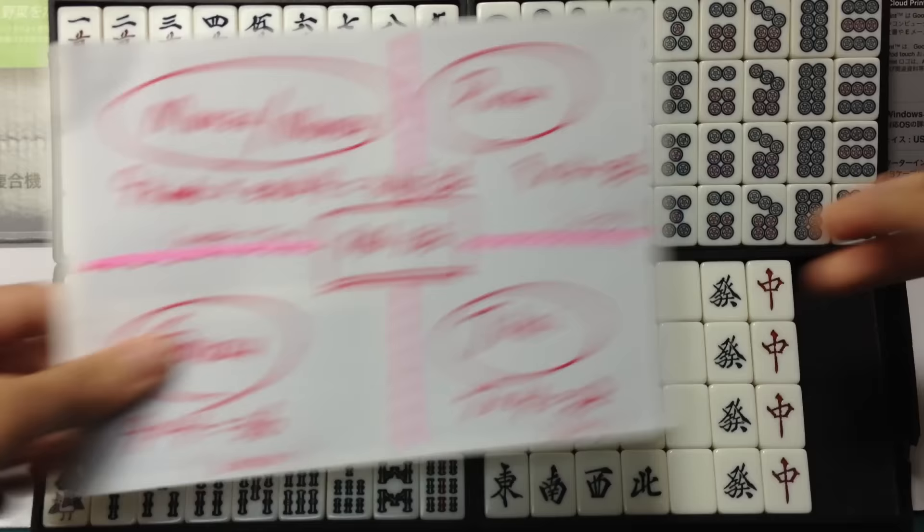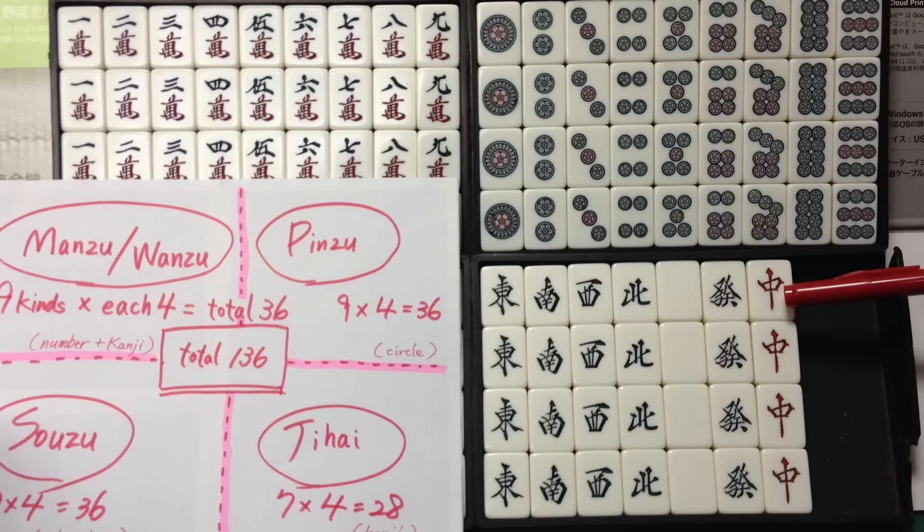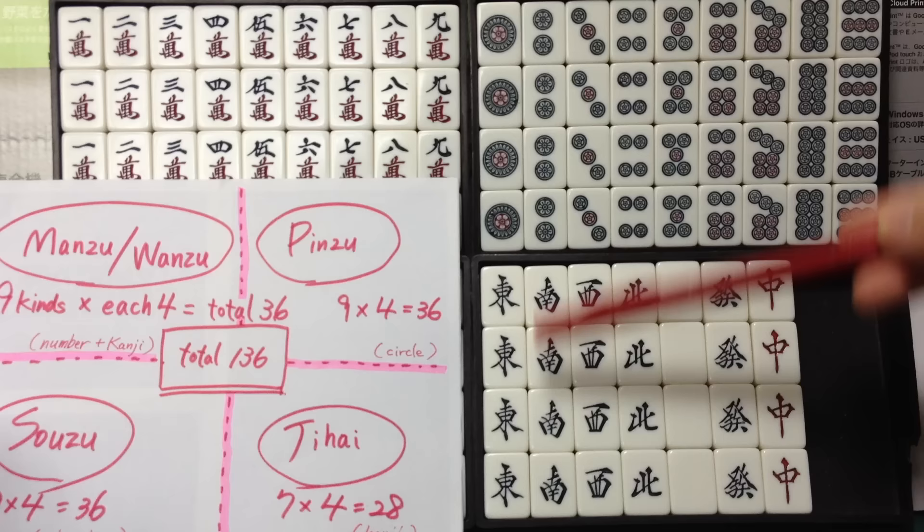Jihai: East, South, West, North, White, Green, Red — 7 kinds, each 4, total 28.